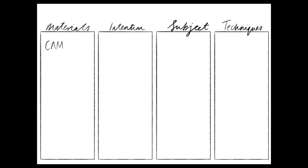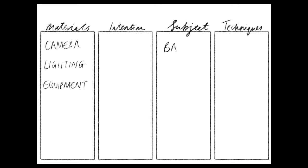Let's just remind ourselves what each of those headings mean. Under materials you need to talk about whether the camera they're using is digital or analogue, the lighting they've used, and any specialist equipment or props that the photographer might need.